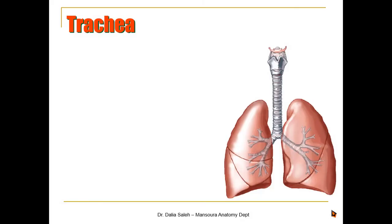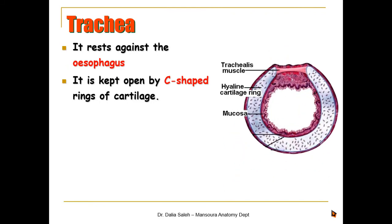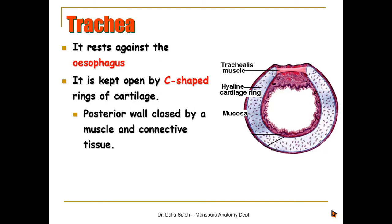The place where the trachea bifurcates is called the carina. The trachea lies in front of the esophagus and is kept open by C-shaped rings made of cartilage. Its posterior wall is closed by muscle and connective tissue, allowing the esophagus to distend during swallowing. Inside, it is lined by ciliated mucosa that keeps the respiratory system clean from foreign particles.